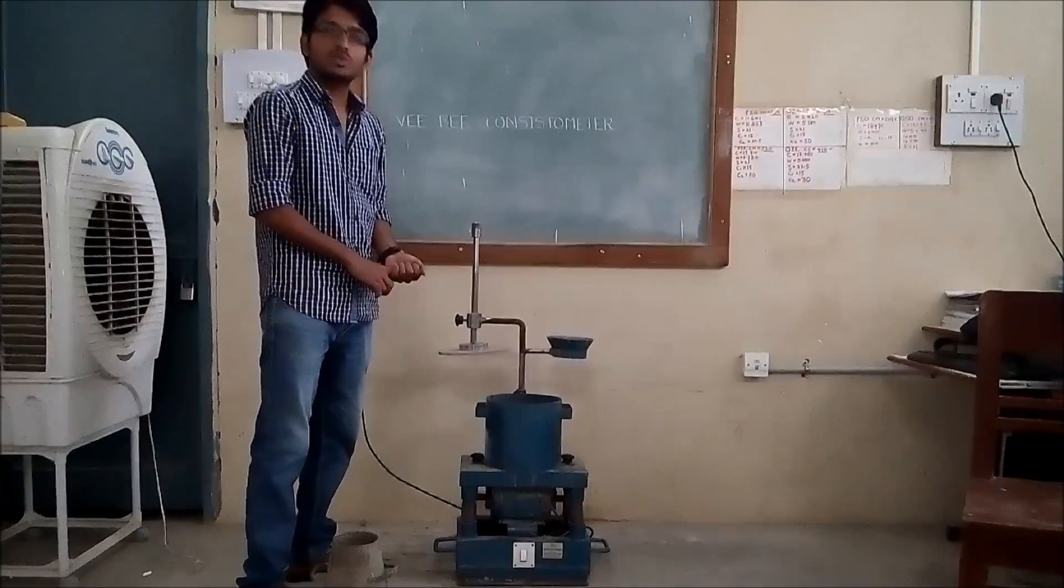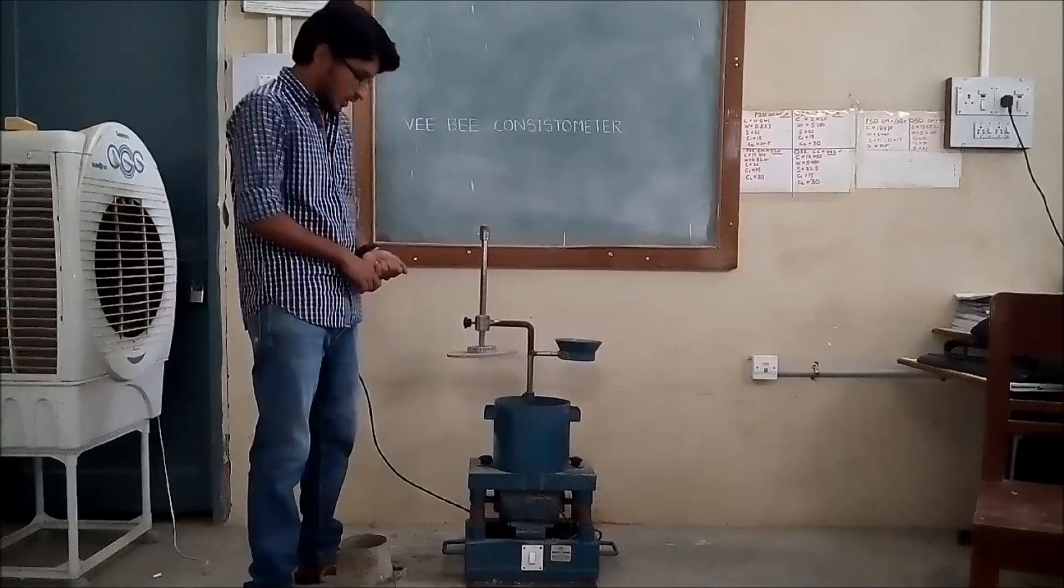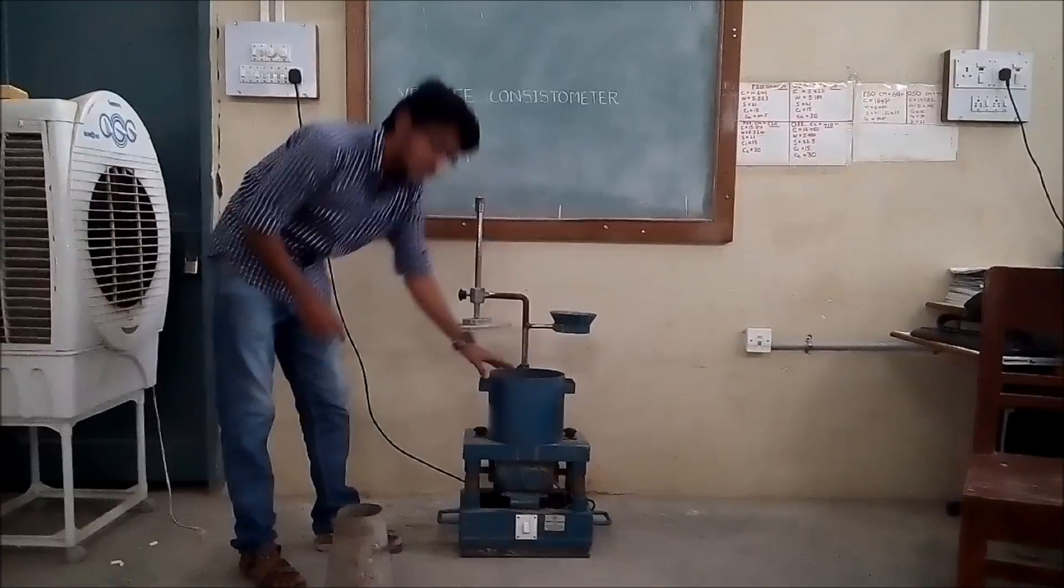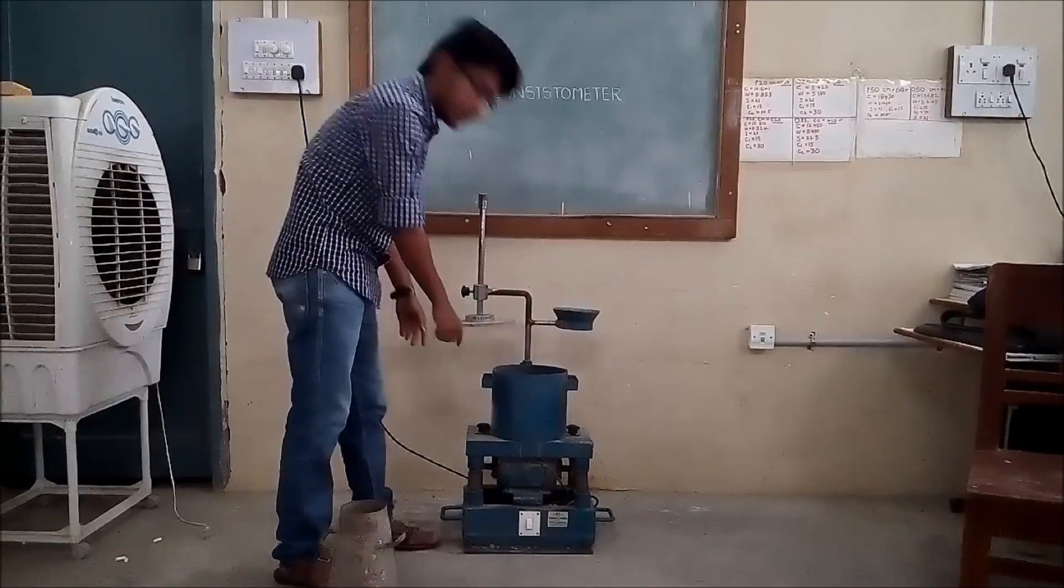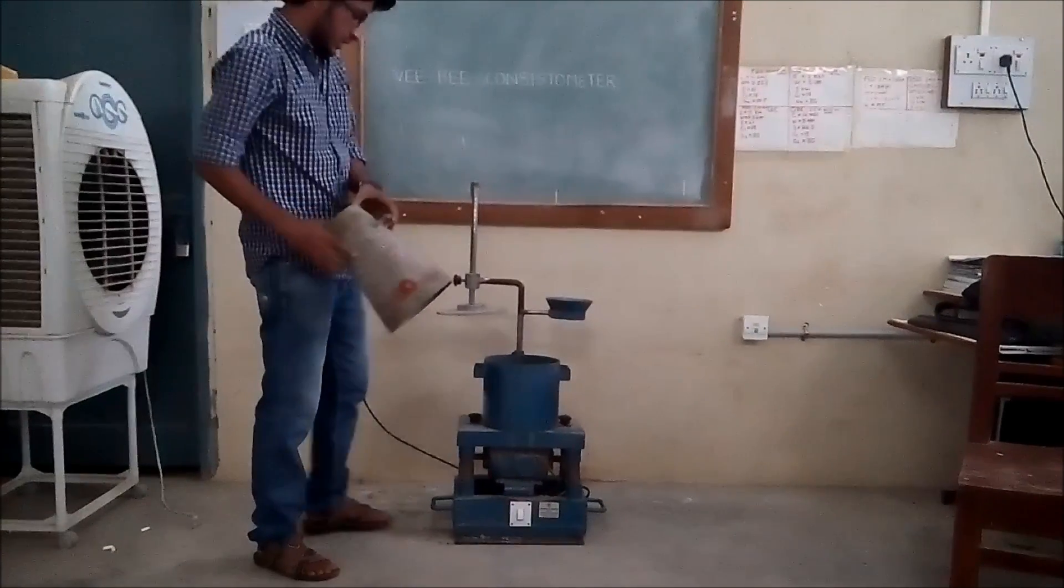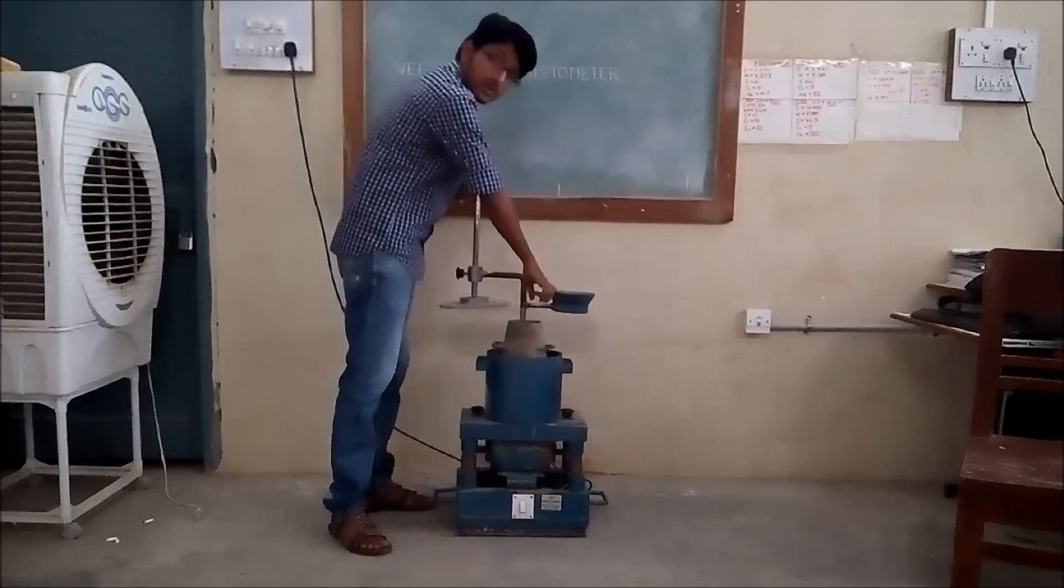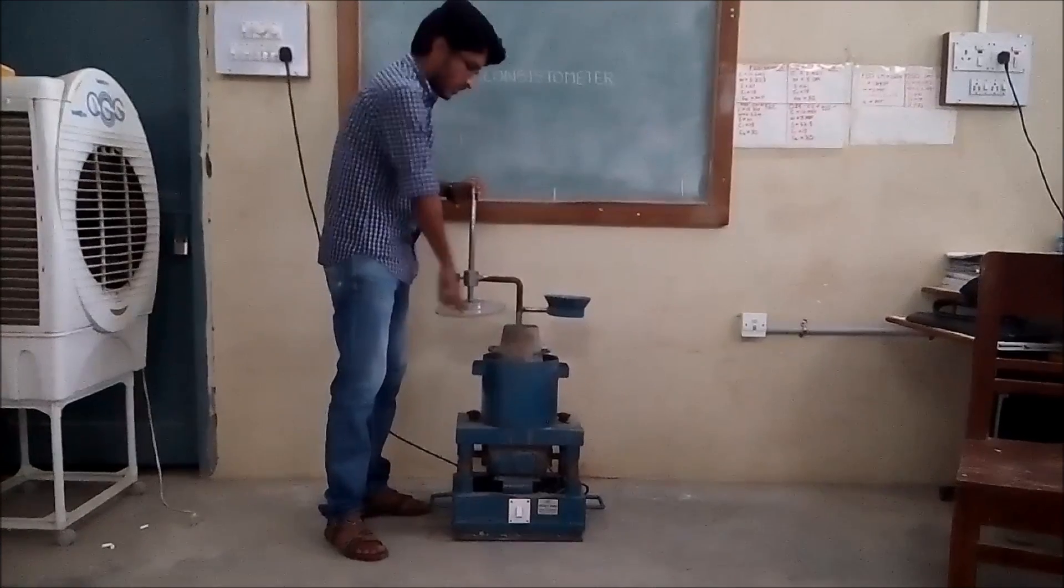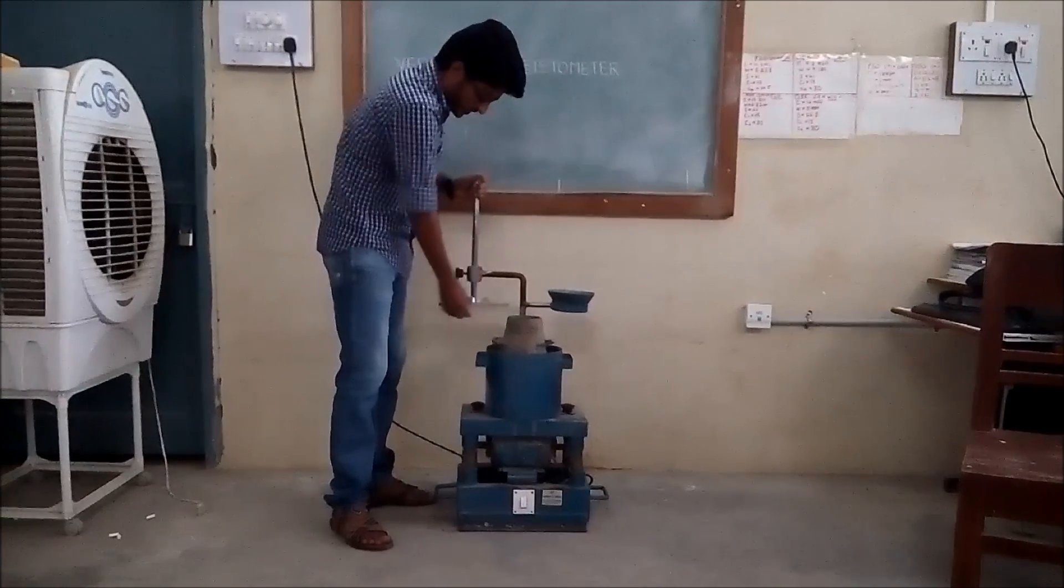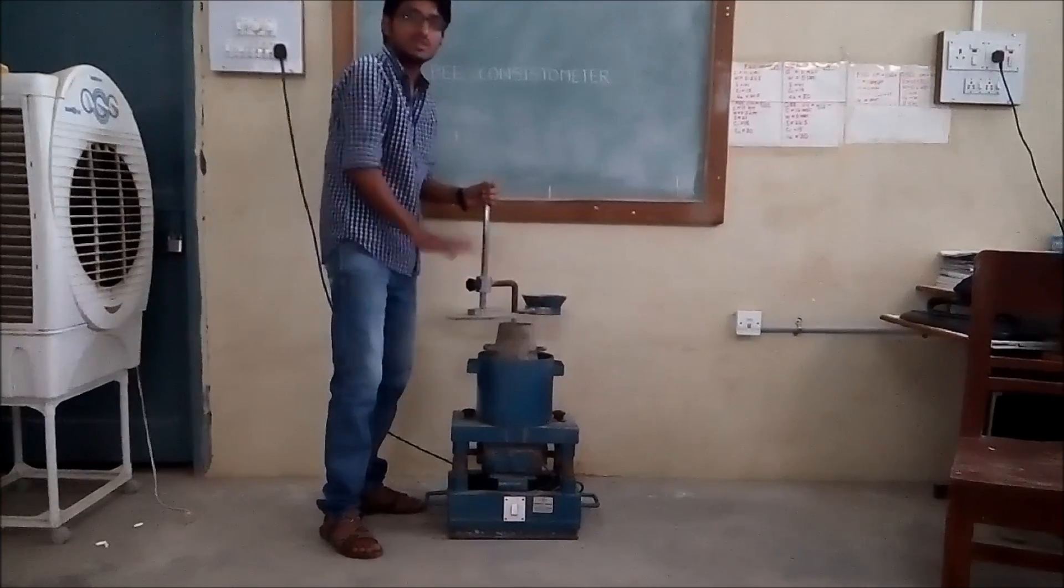Now, IS 1199 gives the detailed procedure that we need to adopt to carry out this experiment. This is vibrating table. Its height should be 300.5 mm from the floor. This is the mold. We will fix this mold on this vibrating table with the help of these two screws. Then place this slump cone inside this mold. Then this is the surcharge arm. On this we have one funnel and this is the glass disc. Now, we will use this funnel to put concrete inside this slump cone. And we will use this glass plate to measure this slump and to check the flatness of the vibrated concrete.